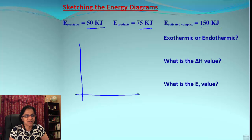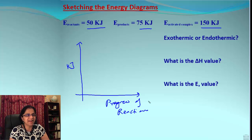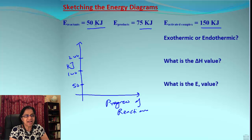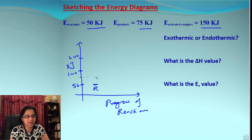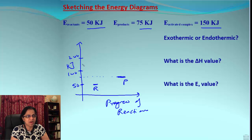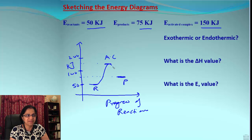Let's begin drawing the axes first. The y-axis is energy in kilojoules and the x-axis is progress of reaction. Using a scale where 50, 100, and 200 are marked — reactants are at 50 kilojoules as the beginning point, products are at 75 kilojoules, and the activated complex is at 150 kilojoules, positioned in the middle between reactants and products. The diagram is drawn accordingly.